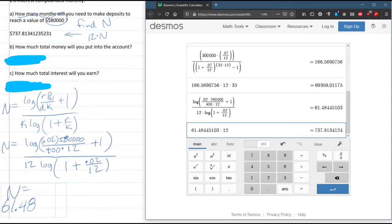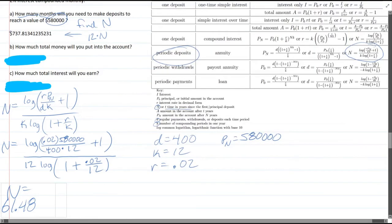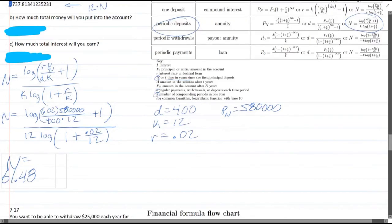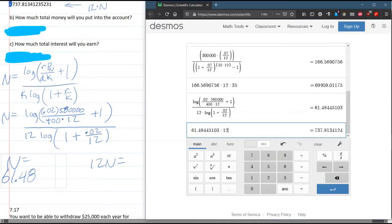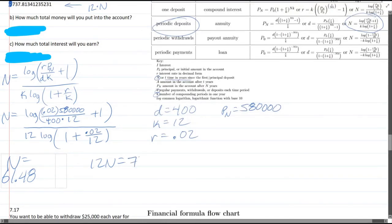I don't know what that dollar sign is doing there, but anyways. So 12N equals that number we just saw, 737.81. And that will be the answer to the first one.